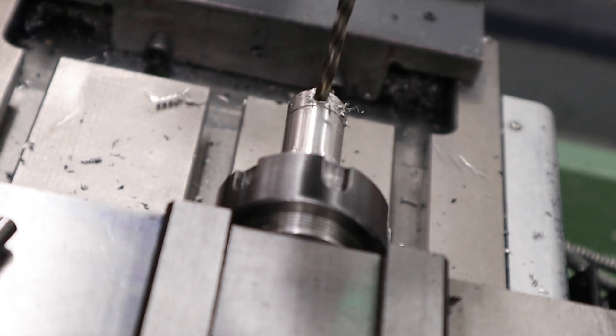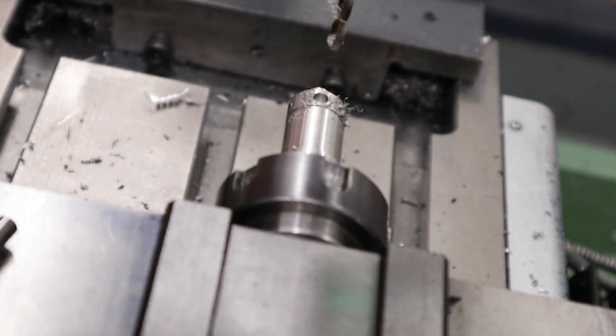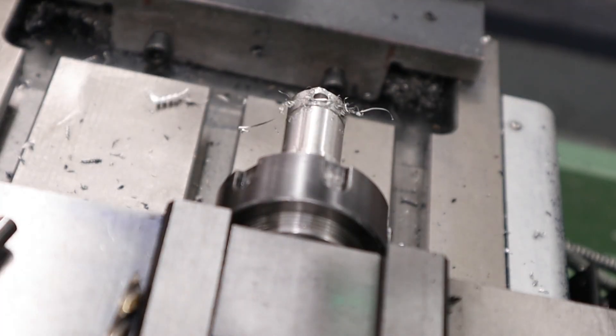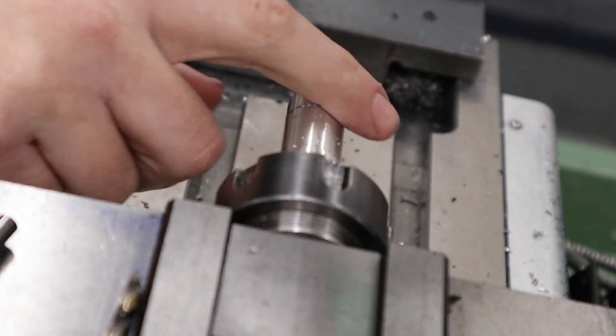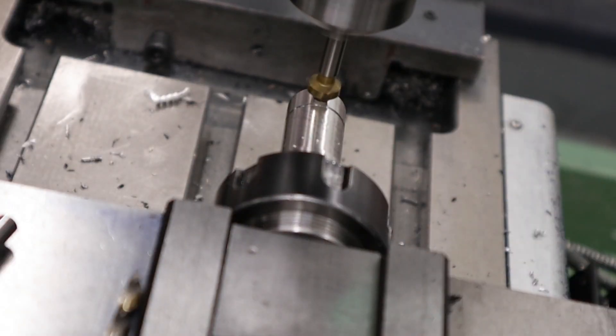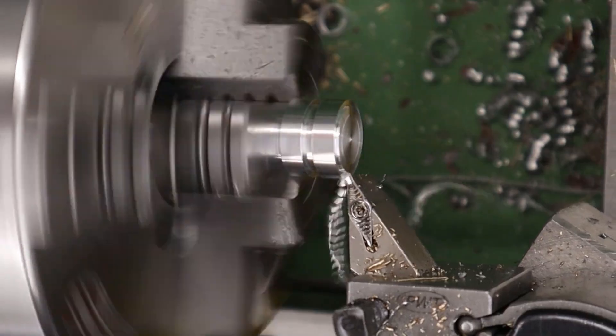Drill the bulk of the material out roughly halfway through the part and then finish the hole off with a 4.6 millimeter drill bit. The final thing to do is to create a nice small chamfer around the outside to remove the sharp edge.